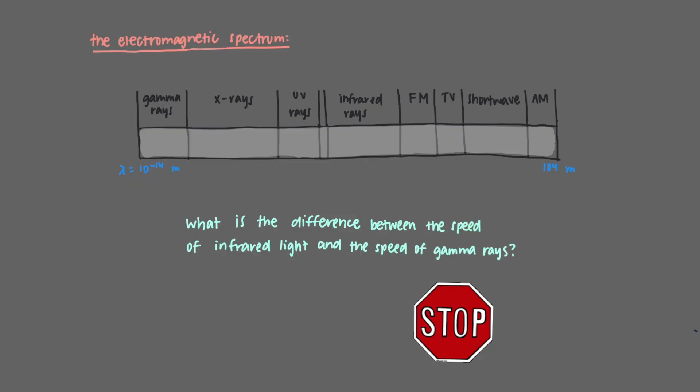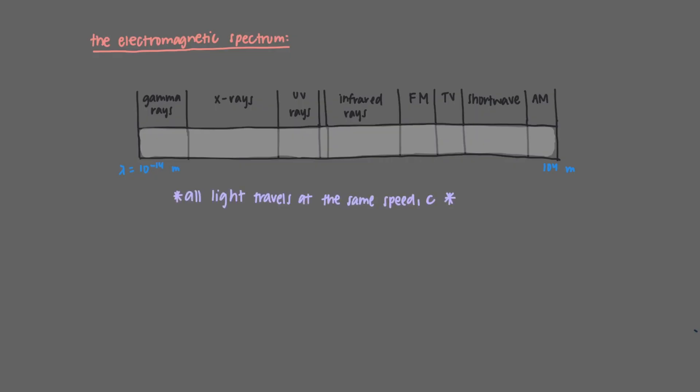What is the difference between the speed of infrared light and the speed of gamma rays? Remember that all light travels at the same speed, the speed of light, c.